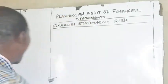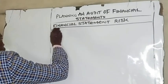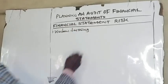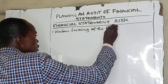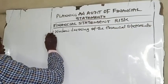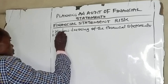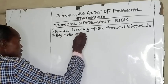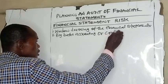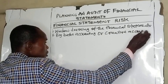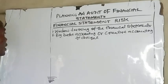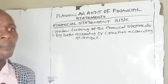Financial statement risks are often caused by, number one, window dressing of the financial statements — where the financial statements are window dressed. Number two, we have Big Bath Accounting. I would advise you to watch my earlier video on Big Bath Accounting in order to know what Big Bath Accounting means.